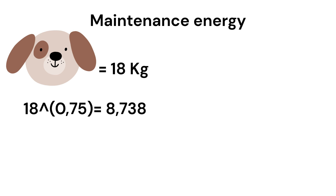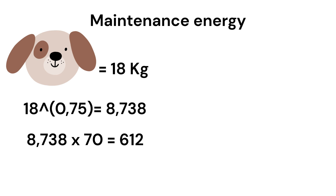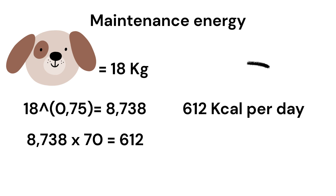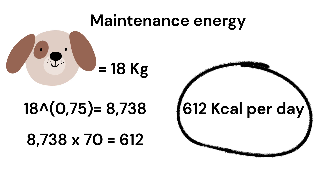Then we take 8.738 and multiply it with 70, and we get something like 611.66, which we round up to 612. So this dog needs 612 calories per day, and that's how you calculate your dog's maintenance energy.